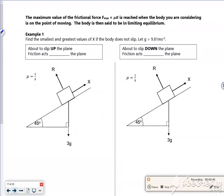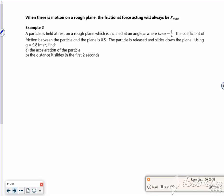I almost feel like we should leave this example and come back to it. I'm quite tempted to do that because it kind of messes you up a little bit. So I'm going to skip this one and come back to it in a minute. A particle is held at rest on a rough slope which is inclined at an angle where tan alpha is three quarters.